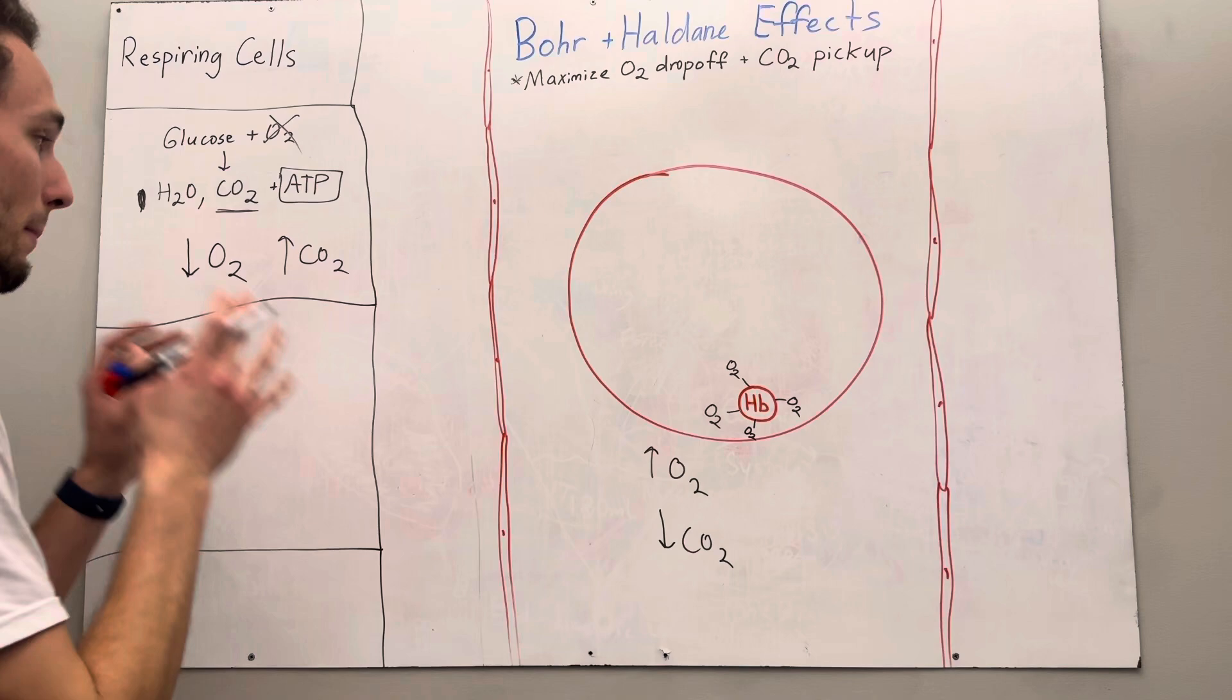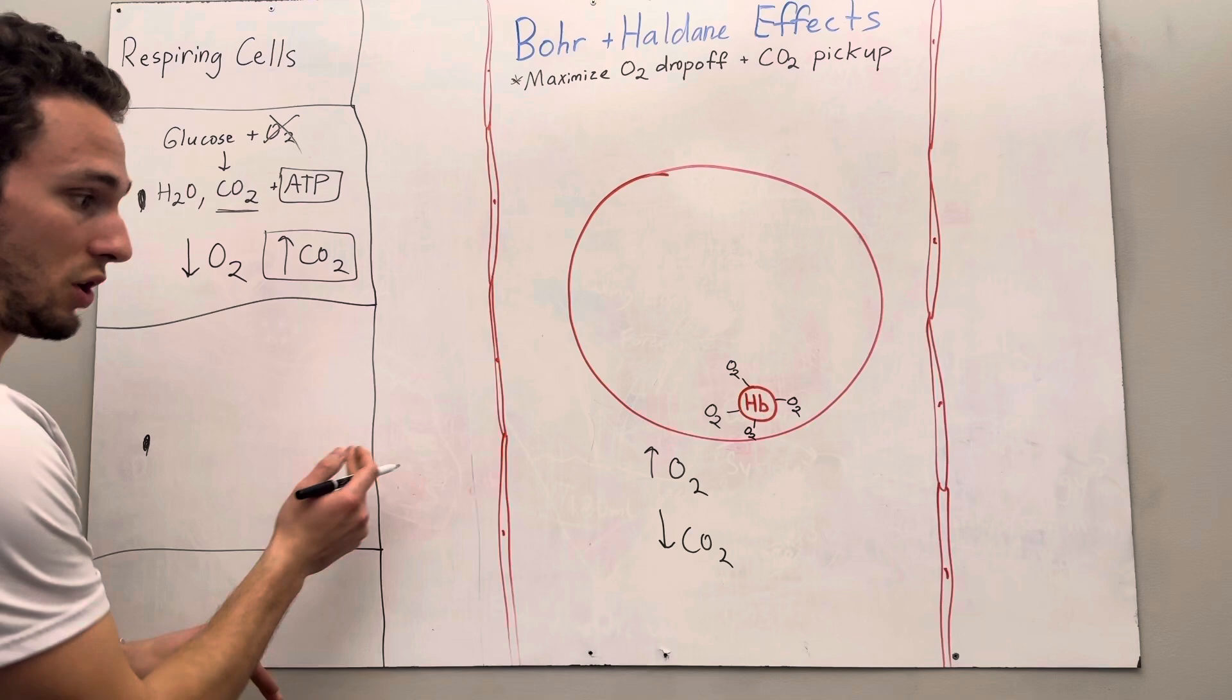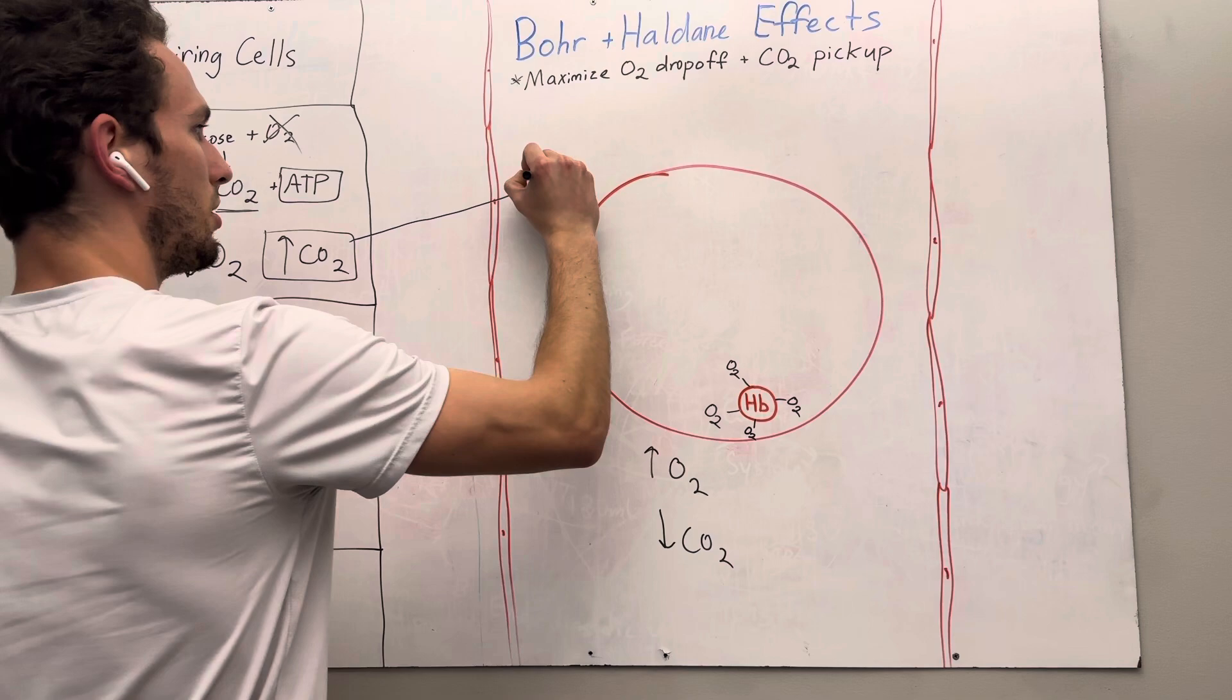We play with gradients a lot in anatomy and physiology, and we remember that high concentrations like to go to low concentrations subsequently. So the carbon dioxide is going to be diffused down its concentration gradient into the blood plasma, and we're going to stick with carbon dioxide here for a second.